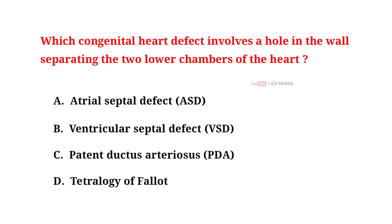Which congenital heart defect involves a hole in the wall separating the two lower chambers of the heart? A. Atrial septal defect. B. Ventricular septal defect. C. Patent ductus arteriosus. D. Tetralogy of Fallot.